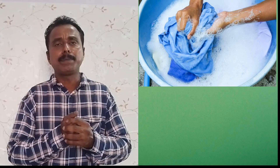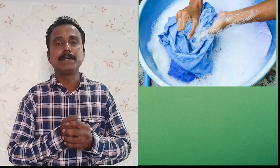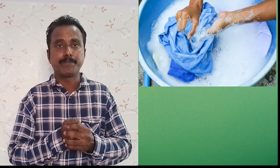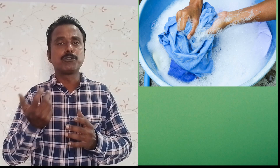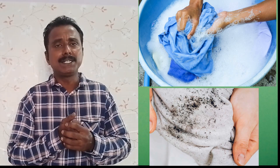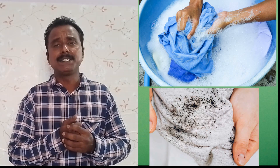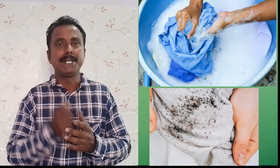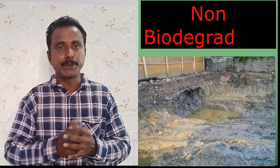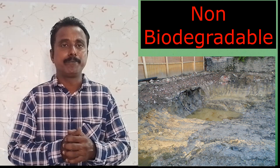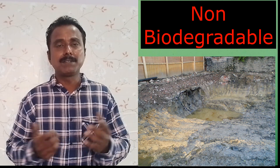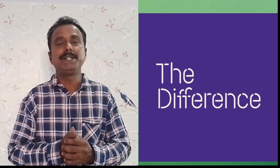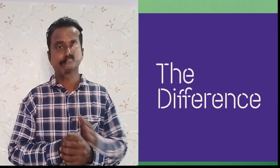Detergent bar is prepared from chemicals, especially petrochemicals. It has powerful cleaning properties and cleaning abilities, so it is suitable for removing heavy dirt and stains on fabrics. It is generally non-biodegradable. This is the basic difference between soap and detergent.